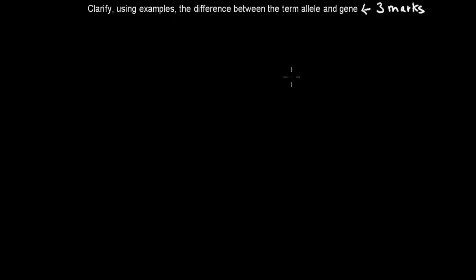I'll read the actual question. Once I've read the question, you get about five seconds to pause the video. Once you've paused the video, attempt the question, and when you're ready, press play and I'll go over the actual answer itself. So the actual question is: clarify, using examples, the difference between the term allele and gene. And that's worth three marks. So when you're ready, press pause, and I'll go over the actual answer once you've finished.